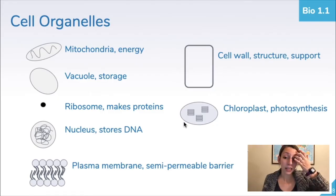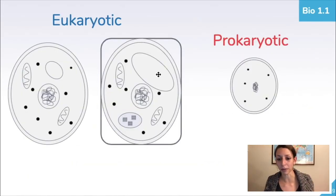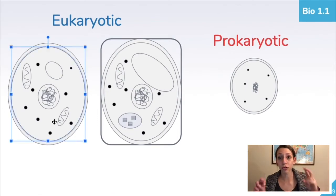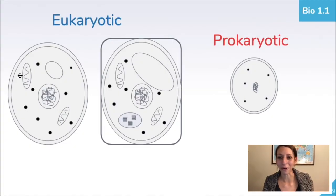Now if we look back at our plant and animal cells, these are both eukaryotic organisms, meaning they have a true nucleus, or they have a nucleus, and other membrane-bound organelles, so organelles like the mitochondria, organelles like vacuoles, and these are generally larger and more complex.